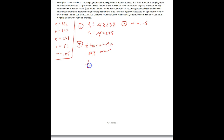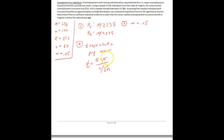The t-test formula is: t equals x-bar minus mu over s divided by the square root of n. It's the exact same formula as before except we replace z with t and replace sigma with s.